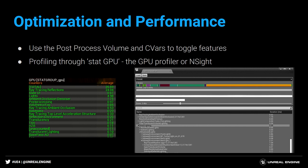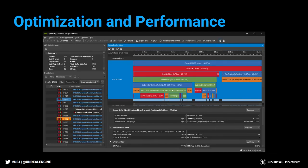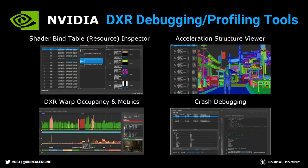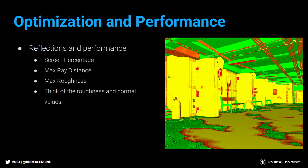In STAT GPU you can see some basic ray tracing stats — ray tracing reflections, top-level acceleration structure, ambient occlusion. Ray tracing reflections takes 24 milliseconds out of 35 in the current view. More stats are coming in 4.23. You can also use NVIDIA's Nsight, which completely supports ray tracing, and NVIDIA has other tools that are all ray tracing ready to help you understand what the rays are hitting and where the cost is going.